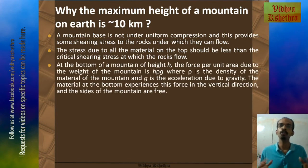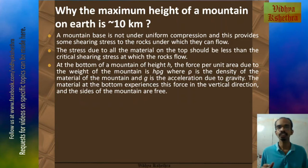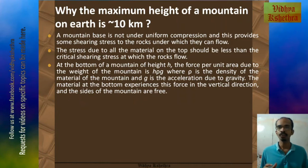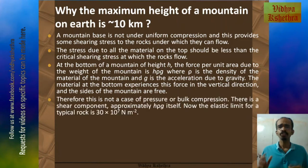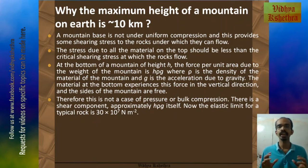At the bottom of a mountain of height h, the force per unit area due to the weight of the mountain is h·ρ·g, where ρ is the density of the material of the mountain and g is the acceleration due to gravity. The material at the bottom experiences this force in the vertical direction and the sides of the mountain are free. Therefore this is not a case of pressure or bulk compression — there is a shear component of approximately h·ρ·g.